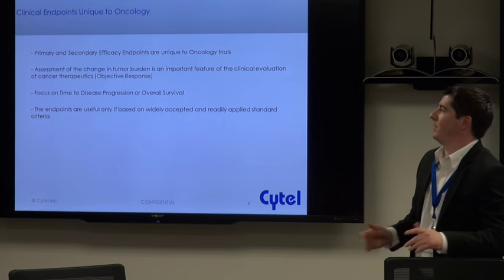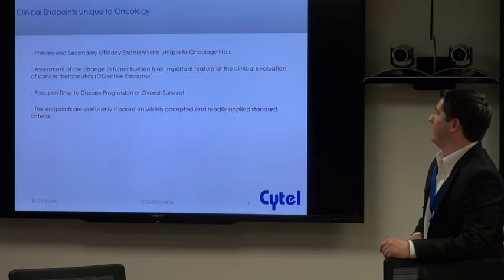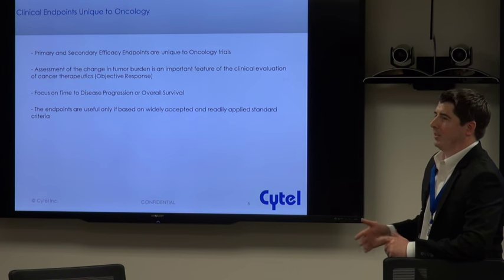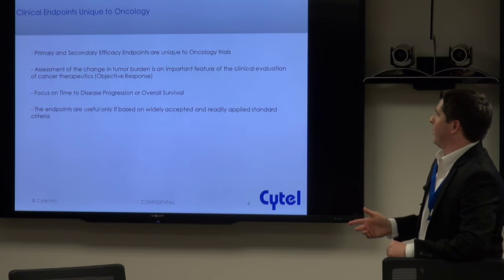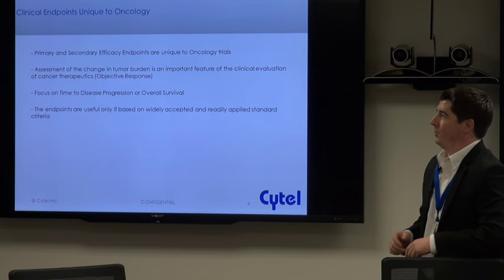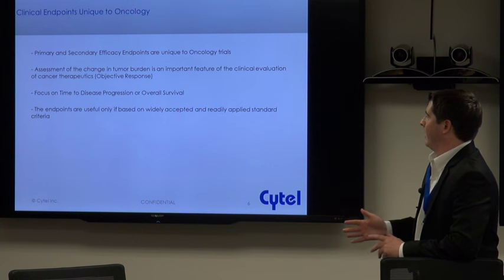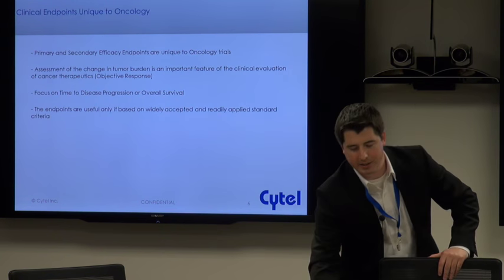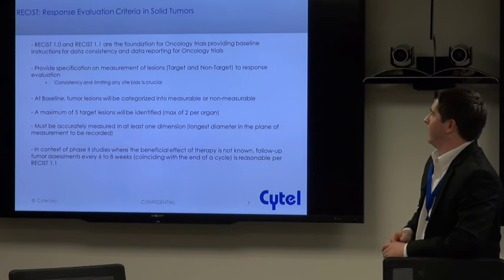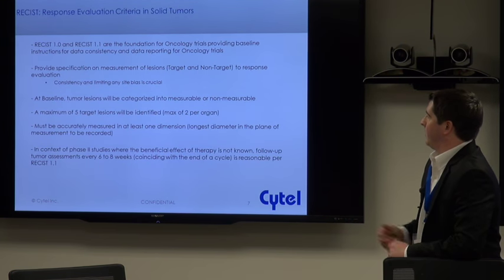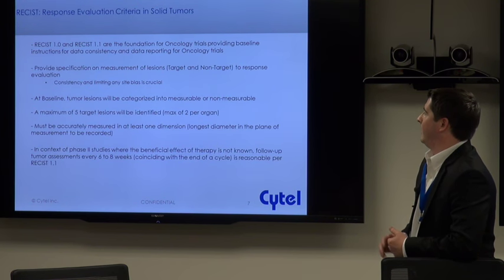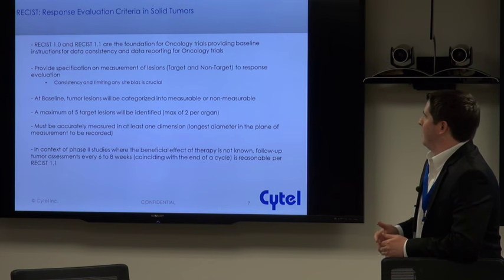The next several slides, if you're familiar with solid tumor oncology, will be a basic recap. But I wanted to go through it as this is one of the most unique aspects of working with oncology trials compared to other therapeutic areas for a data manager. The use of tumor regression as an endpoint in phase two trials assessing a new agent for evidence of tumor effect has been backed by years of evidence. Those endpoints associated with tumor regression are only going to be useful if they're based on widely accepted standards — and that's where RECIST comes in: Response Evaluation Criteria in Solid Tumors.